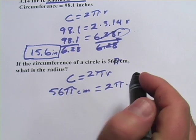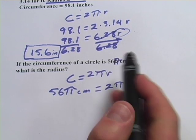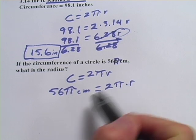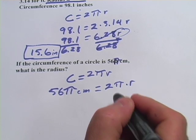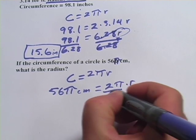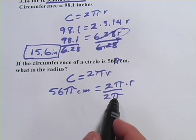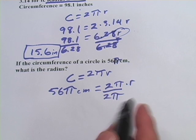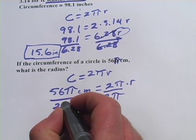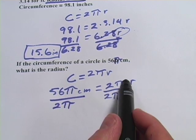Now in this case, I could try to divide by 6.28, but I've got π's on both sides, so it's a lot easier if I just divide by 2π as it is, rather than 6.28. They're pretty much the same thing if you substitute in 3.14 for π. But I'm just going to leave it like this, and I'll show you how this works. Now on this side, 2π divided by 2π, that cancels out, leaves the r alone, which is what we want to solve for.